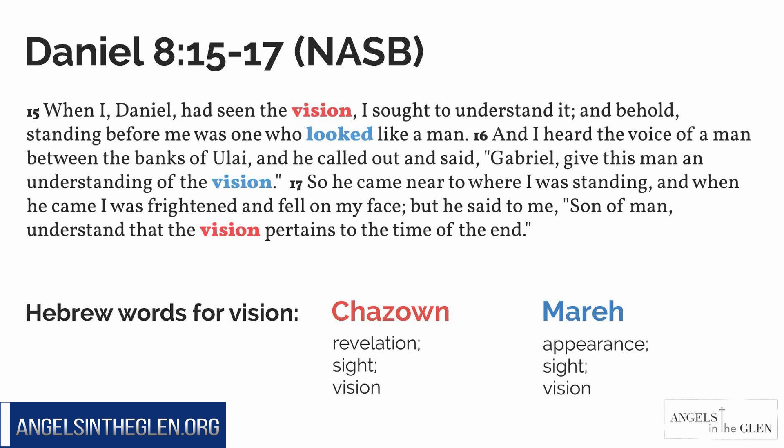Look at the difference on the screen. 'When I, Daniel, had seen the vision' — in red, that's hadzone. When I, Daniel, had seen the hadzone, I sought to understand it. And behold, standing before me was one who looked — that word is mare — like a man. Right there, those are the two visions. Look at verse 16: Gabriel is given instructions to give Daniel an understanding of the mare vision. And then in verse 17, he reassures Daniel and says, 'Son of man, understand that the hadzone pertains to the time of the end.' So there you have it — the two visions.